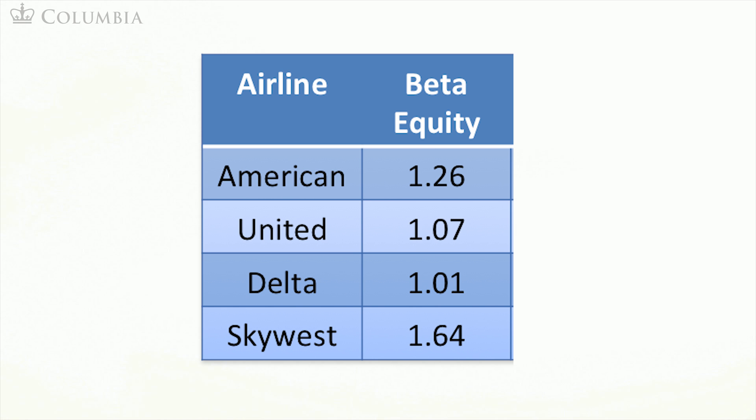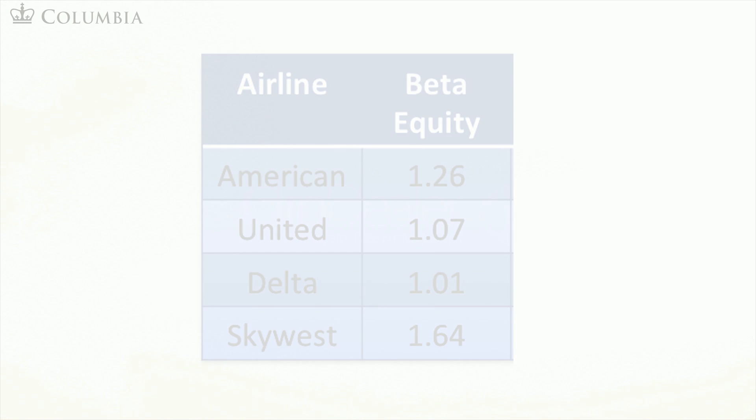Let's think about the risk of these firms. They should be subject to very similar economic shocks. When the economy is booming, there is higher demand for travel, and sales should increase for all of these firms. Similarly, when oil prices increase, operating costs should increase for all of these firms. It seems that the ups and downs of these firms should be highly correlated.